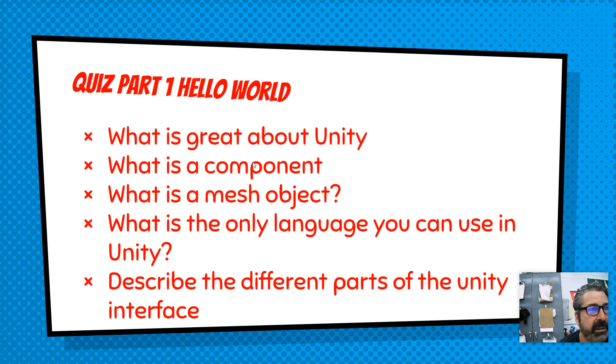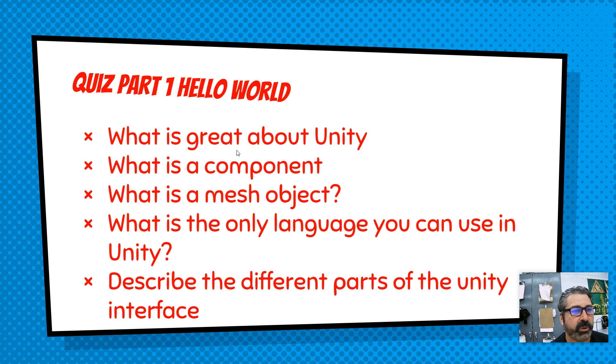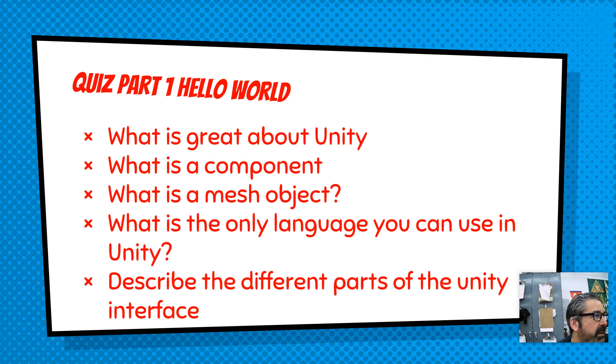We're going to write code in C#, which is pretty similar to Java. Unity refers to the code files we write as scripts, so we'll be writing C# scripts. Answer the questions in your notes — don't turn them in yet because you still have to take the pre-practice test and there's more to do.